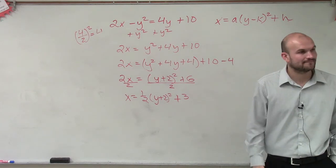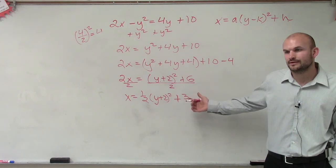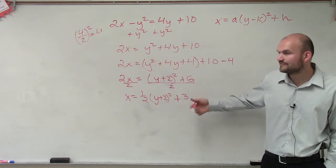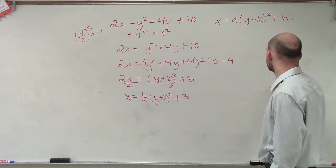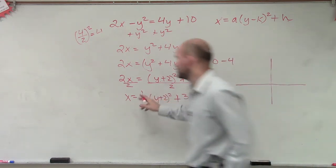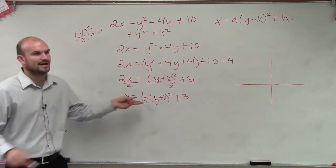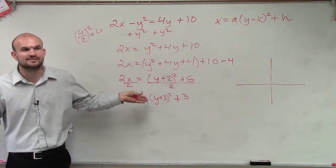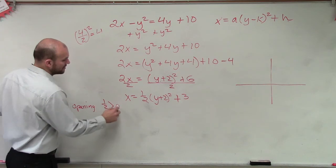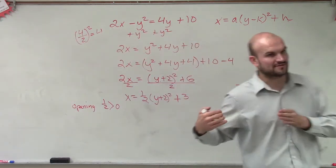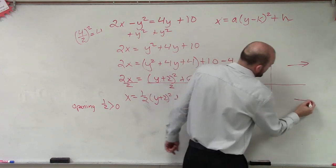So here's what we have. So now what we need to do is go ahead and find the vertex and the axis of symmetry. First of all, let's determine what this graph would even possibly look like. So we look at the opening — we look at our a. Is our a greater than 0 or less than 0? Greater than 0, right? It's not negative, so it's greater than 0. So therefore, is my graph going to open to the right or to the left? Because we know it's not up and down because y squared. So it opens to the right.